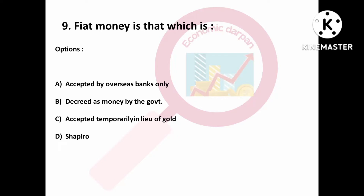Question number nine is: fiat money is that which is — Option A: accepted by overseas banks only; Option B: decreed as money by the government; Option C: accepted temporarily in lieu of gold; Option D: none of these. Option B is right — decreed as money by the government.